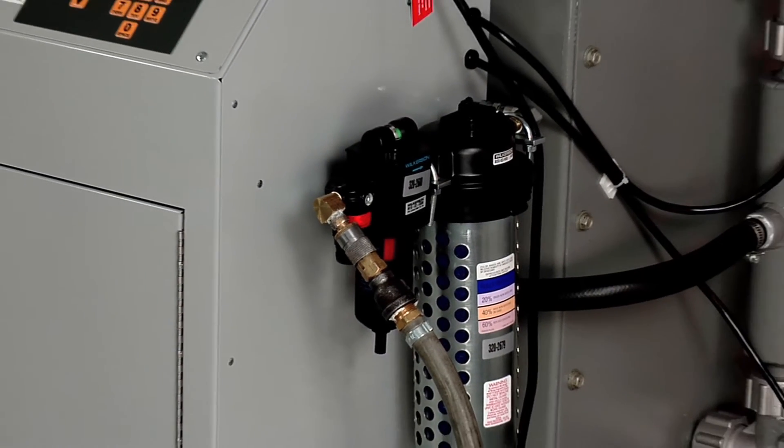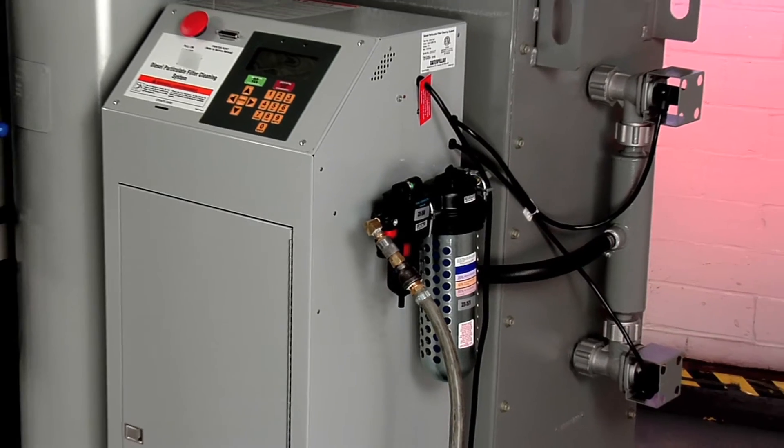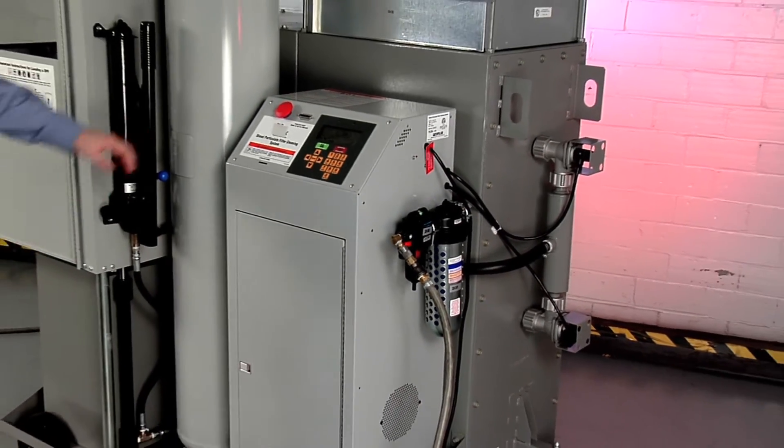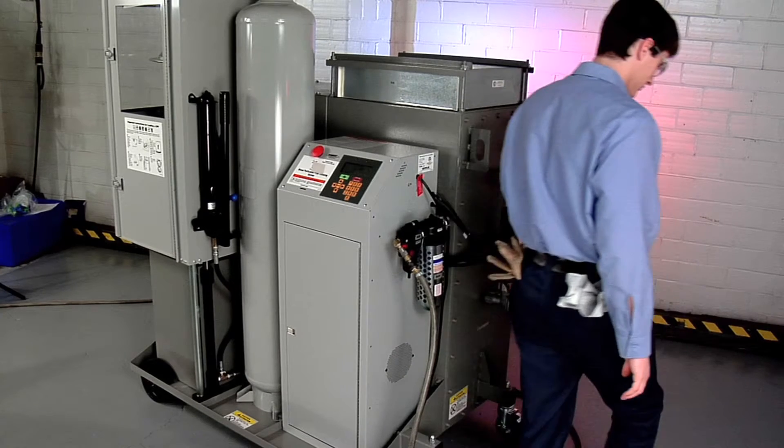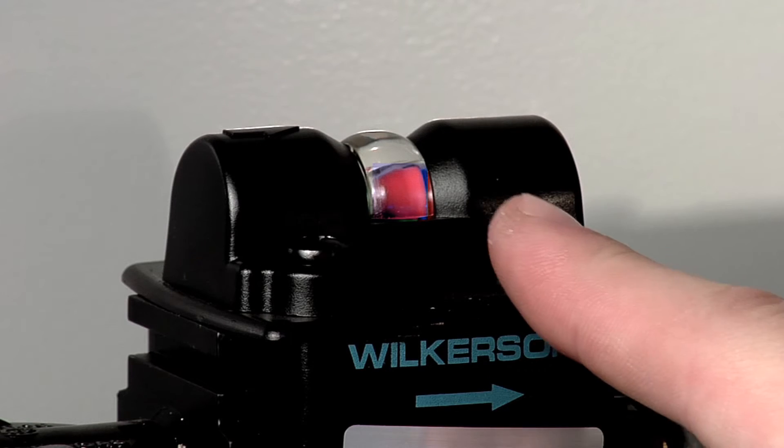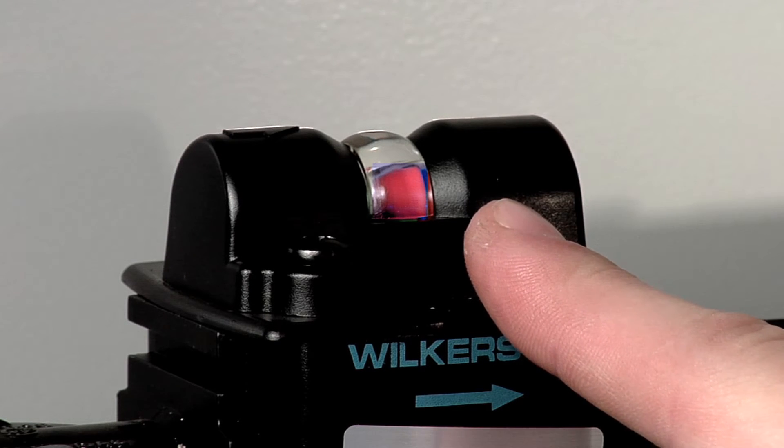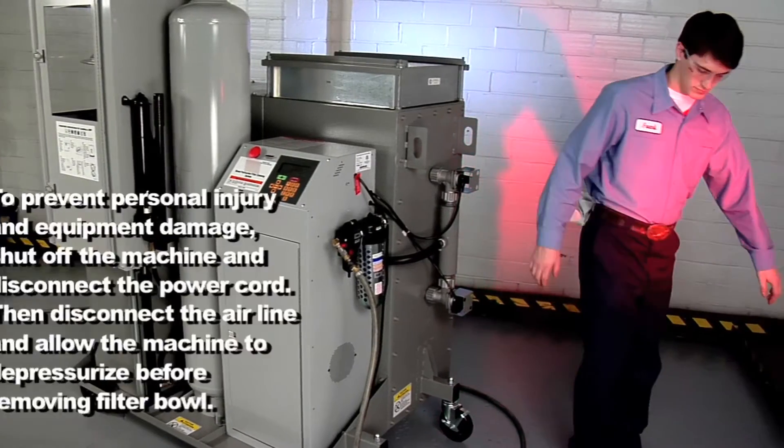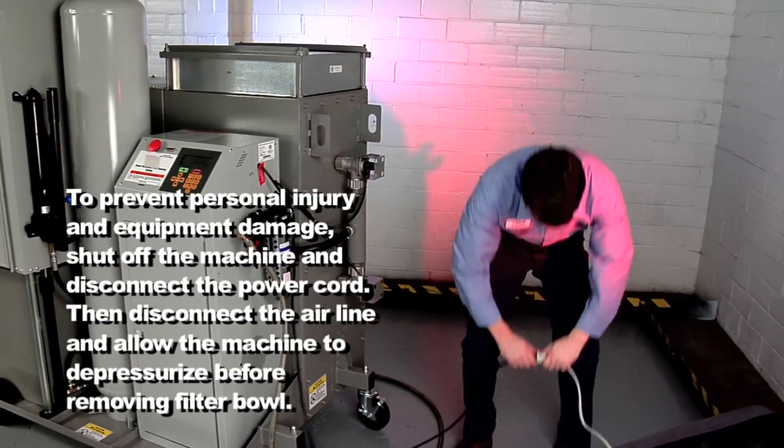The coalescing filter removes oil from the compressed air, preventing the oil from coating the desiccant and hampering its ability to dry the air. The service indicator on the coalescing filter turns red when it needs to be replaced. Filter elements cannot be cleaned, they must be replaced.